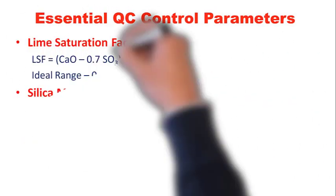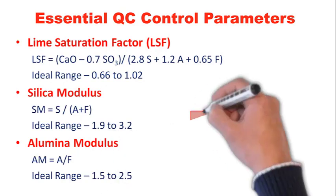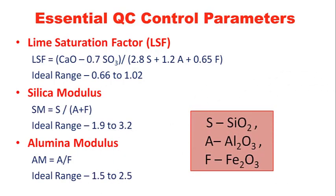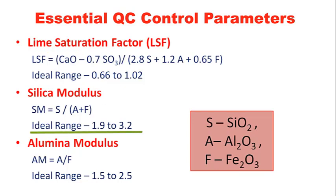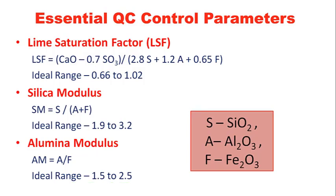There are also quality control parameters used in the manufacturing of clinker: the Lime Saturation Factor (LSF), with an ideal range of 0.66 to 1.02; the Silica Modulus, with an ideal range of 1.9 to 3.2; and the Alumina Modulus, which should be in the range of 1.5 to 2.5. These three major parameters are used to control the quality of raw material and the quality of clinker.